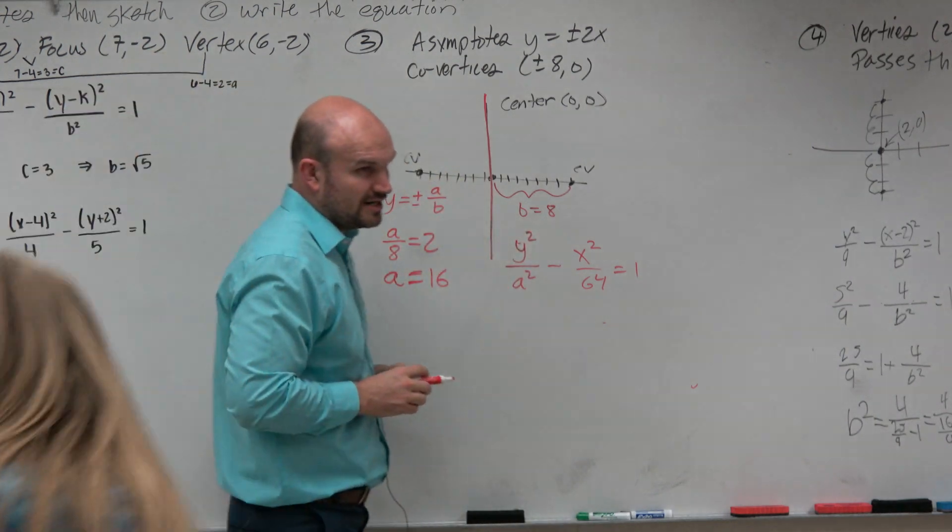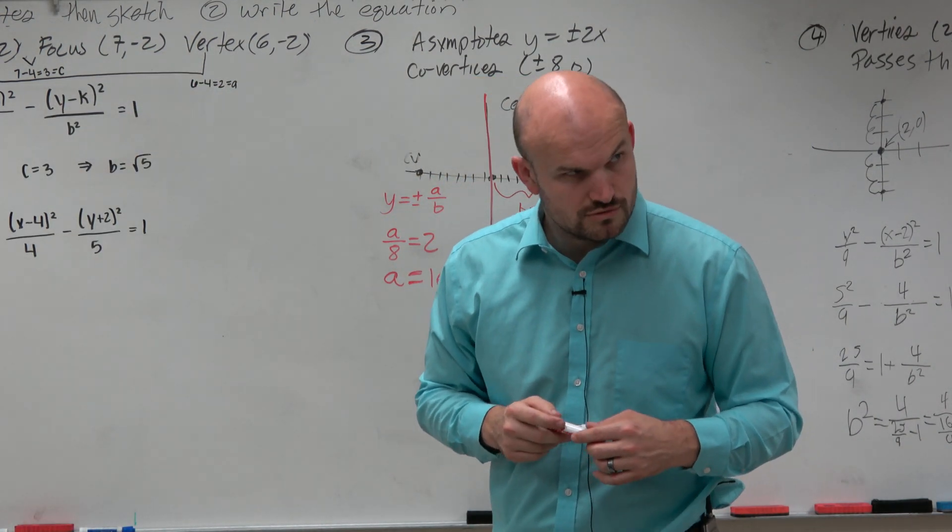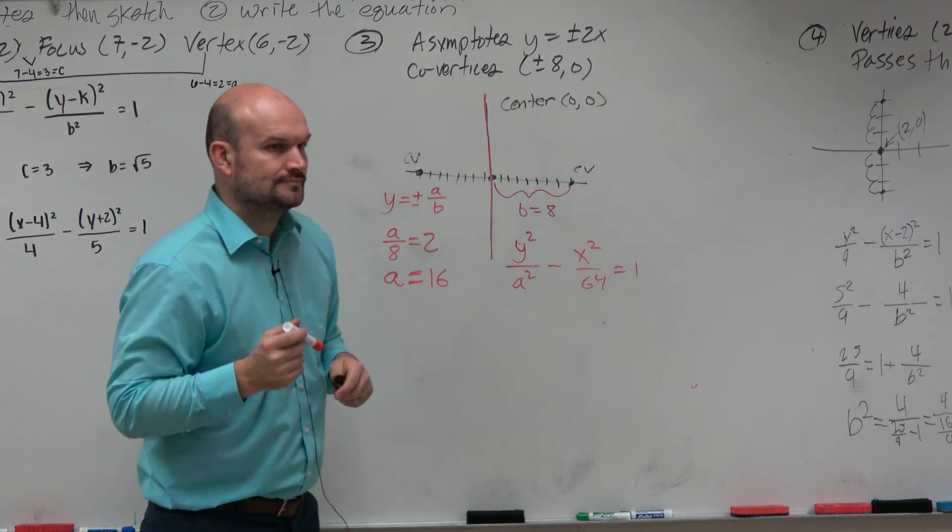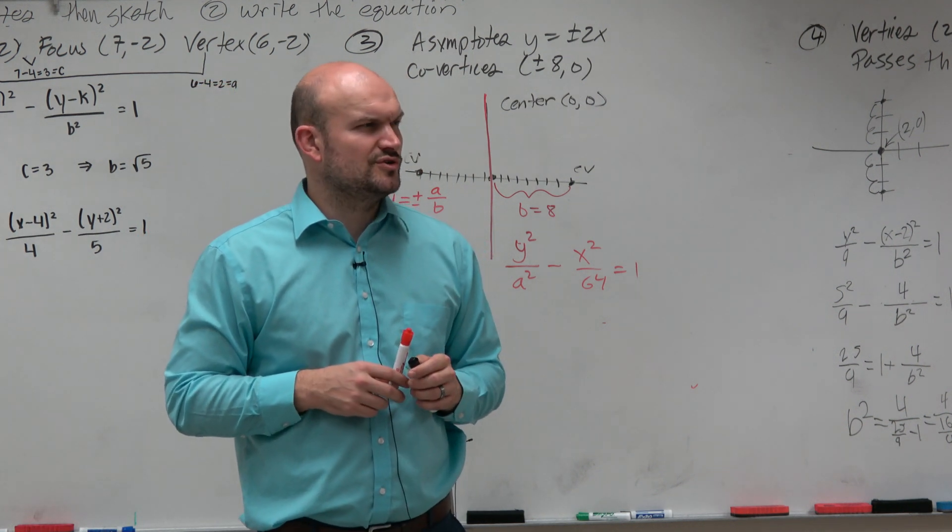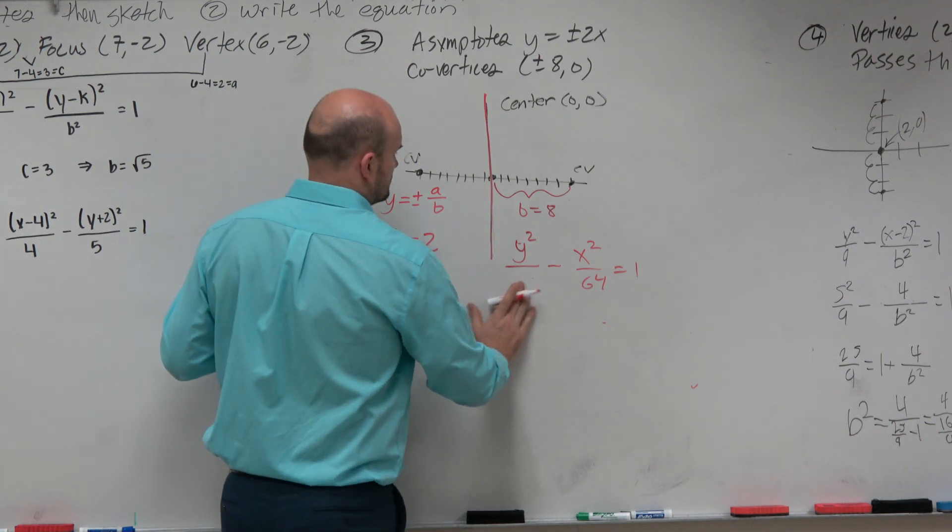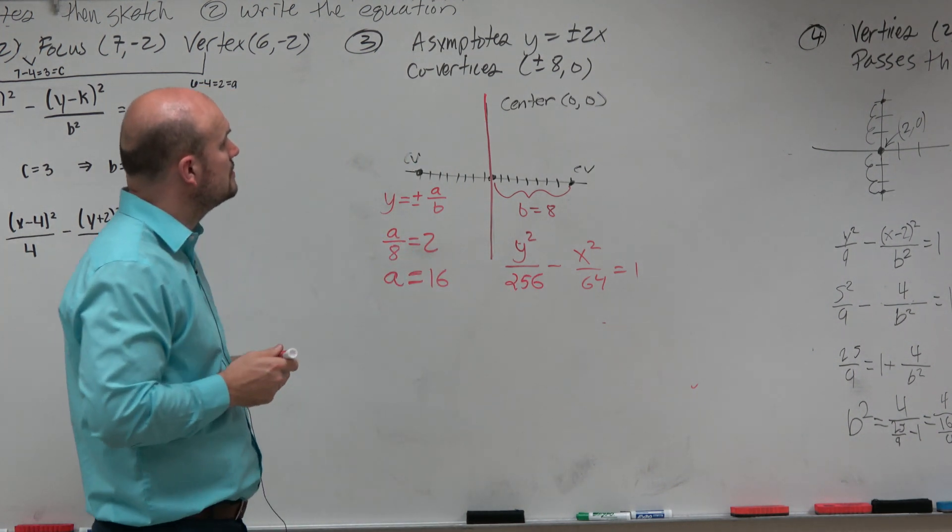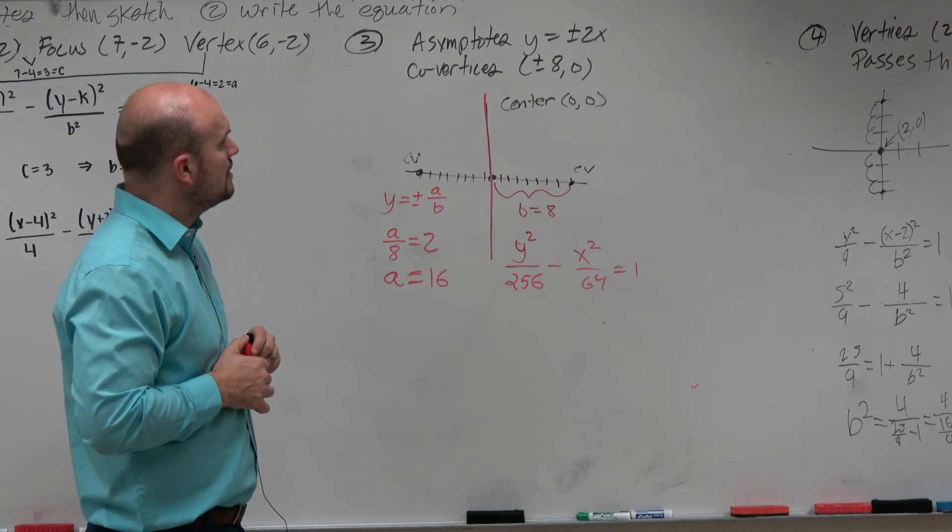So then 16 squared is going to be 16 times 16, which is? 156. 256? 56? 17? All right.